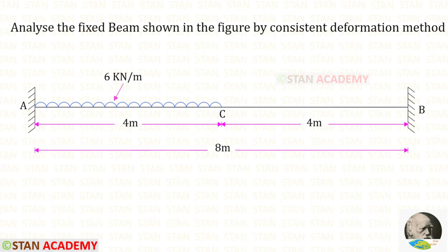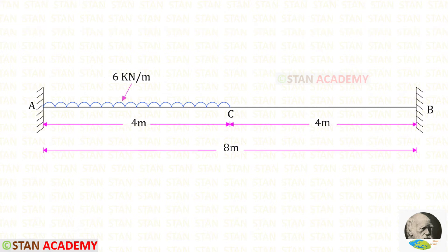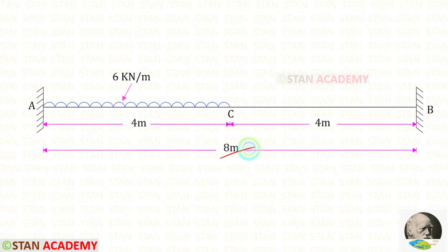Hello everyone. Today we are going to analyze a fixed beam using the consistent deformation method. In this beam we have a uniformly distributed load of 6 kN per meter acting in the left half span. The total length of the beam is 8 meters.